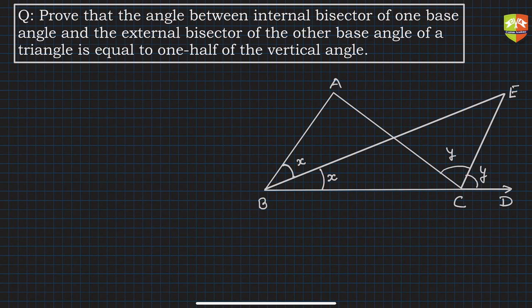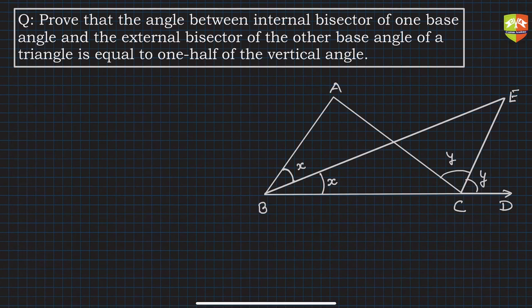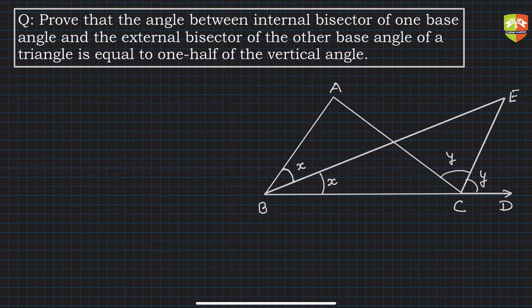Welcome friends to another problem-solving session on triangles. We have a problem which says we have to prove that the angle between the internal bisector of one base angle and the external bisector of the other base angle of a triangle is equal to one half of the vertical angle. Let's try and understand this first.